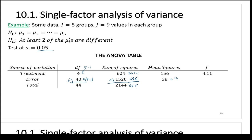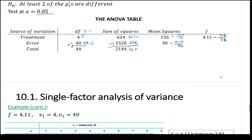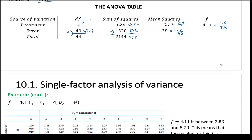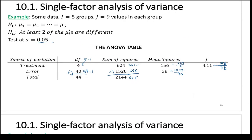Actually, MSE is 1520 divided by 40, and there's also 156 over 38 — you use the previous column to get the next one. F statistic comes out to 4.11. Degrees of freedom V1 equals 4, V2 equals 40. Now look up in the F table.